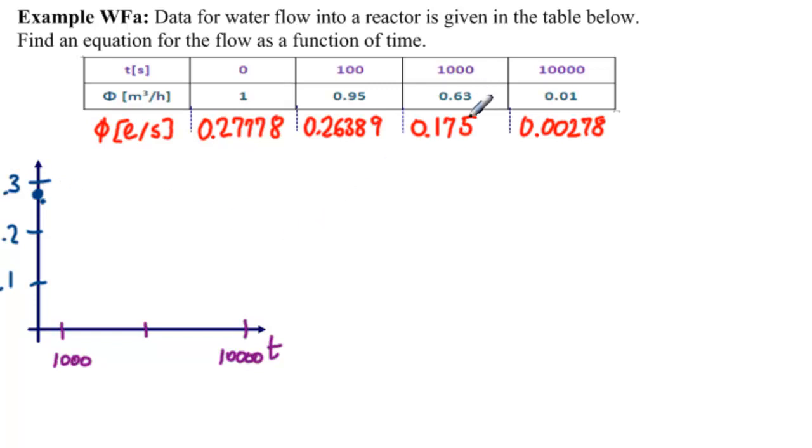Then we get over to 1,000 and we get to 0.175. So here's 1,000, 0.175. And then we're over here at 10,000 at almost 0.